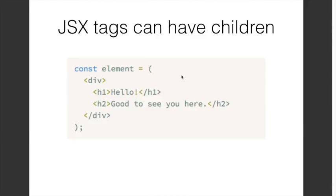Finally, JSX tags can also have children. We are creating this element variable from JSX code that has a div tag, and within the div tag it has two children: h1 and h2. So we can define our JSX code to have children and it will translate accordingly into React element calls. That's it for JSX — we'll talk about React components and React elements in detail in the next video.